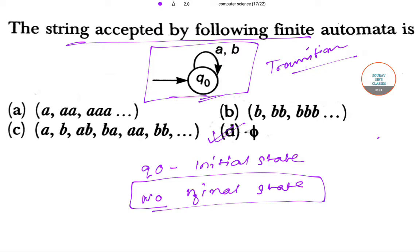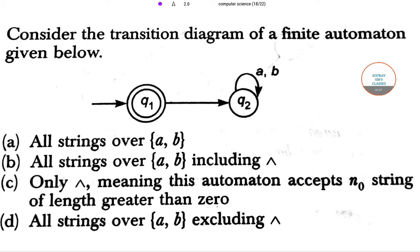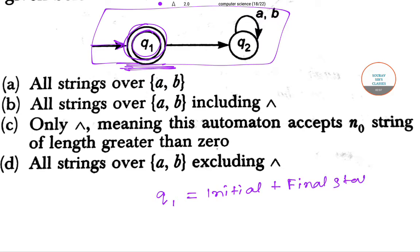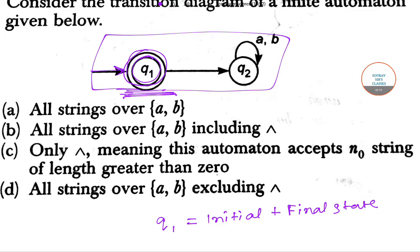Let's move to our next question. Here is another transition diagram. In this diagram, Q1 is the initial state. This figure shows that Q1 is both the initial and the final or termination state. However, it is not accepting any string — Q1 is not accepting any string.